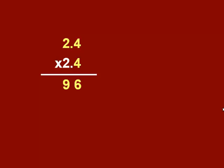Next, we put down a zero, and then we'll multiply 2 times 24, which is 48. We'll add the two numbers together and come up with 576.